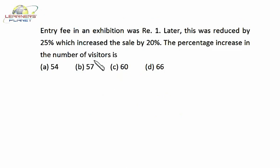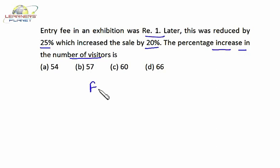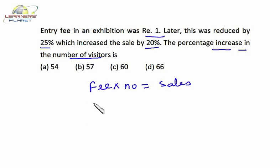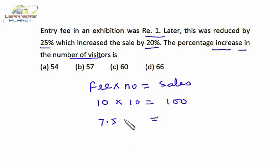In this question, the entry fee in an exhibition was rupees 1; later this was reduced by 25 percent, which increased the sales by 20 percent. We have to find the percentage increase in the number of visitors. There are two variables: entry fee and number of visitors. Fee into number of visitors equals total sales. Let the initial fee be 10 and number of visitors be 10, so sales is 100. The fee is reduced by 25 percent, so the new fee is 7.5.